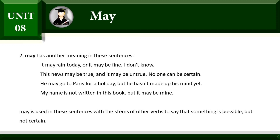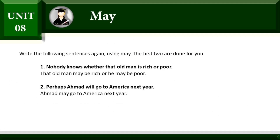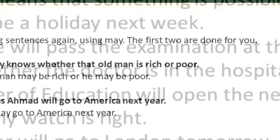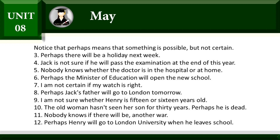Write the following sentences again using may. The first two are done for you. Nobody knows whether that old man is rich or poor — that old man may be rich or he may be poor. Perhaps Ahmed will go to America next year — Ahmed may go to America next year. Notice that 'perhaps' means that something is possible but not certain. Perhaps there will be a holiday next week — there may be a holiday next week.